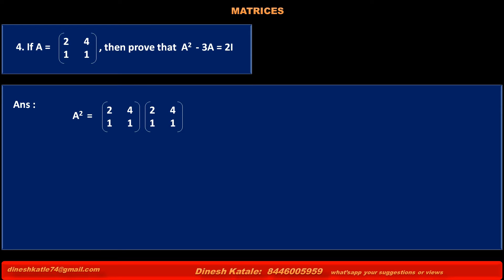This equals the multiplication of elements of the first row of matrix A into corresponding elements of the first column of the same matrix A. That is (2)(2) + (4)(1). Similarly, first row of matrix A into second column of the same matrix A. That is (2)(4) + (4)(1).